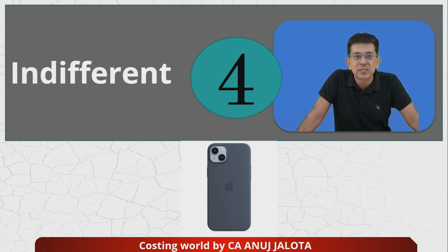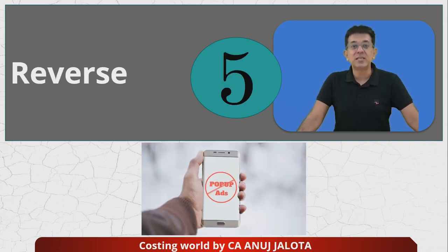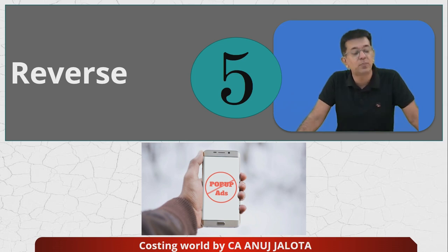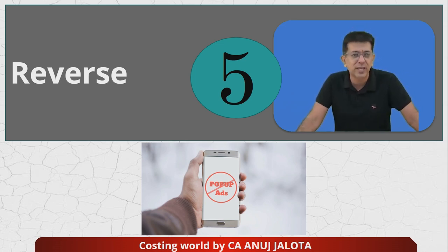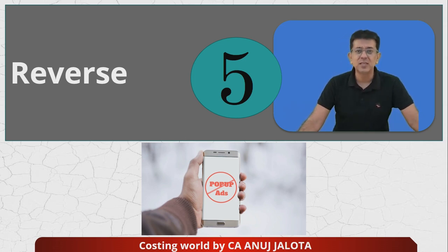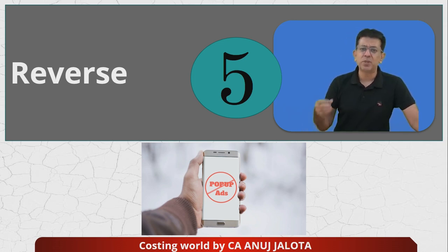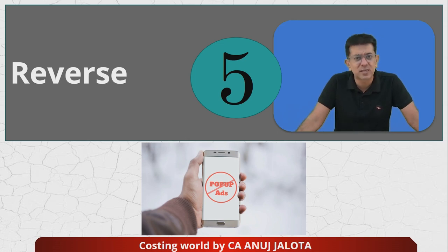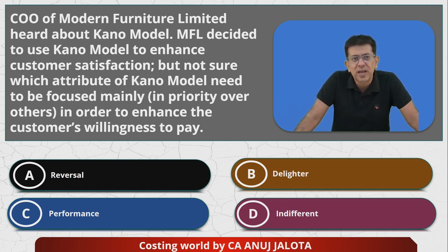The fourth part is indifferent — it does not matter to the consumer. For example, what size the Apple logo is on the iPhone is useless to us as consumers. The fifth is reverse — if these features are present, the consumer would actually not want to buy the product. Example: pop-up ads on apps, especially on phones like Mi or Vivo where ads appear for every app.